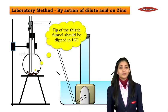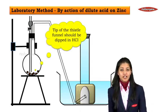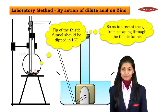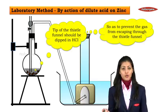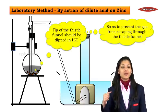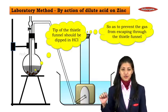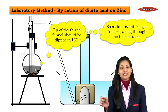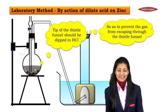The tip of the thistle funnel should be dipped in the HCl properly. Why? So as to prevent the gas from escaping through the thistle funnel. That is why it is completely immersed in the acid.